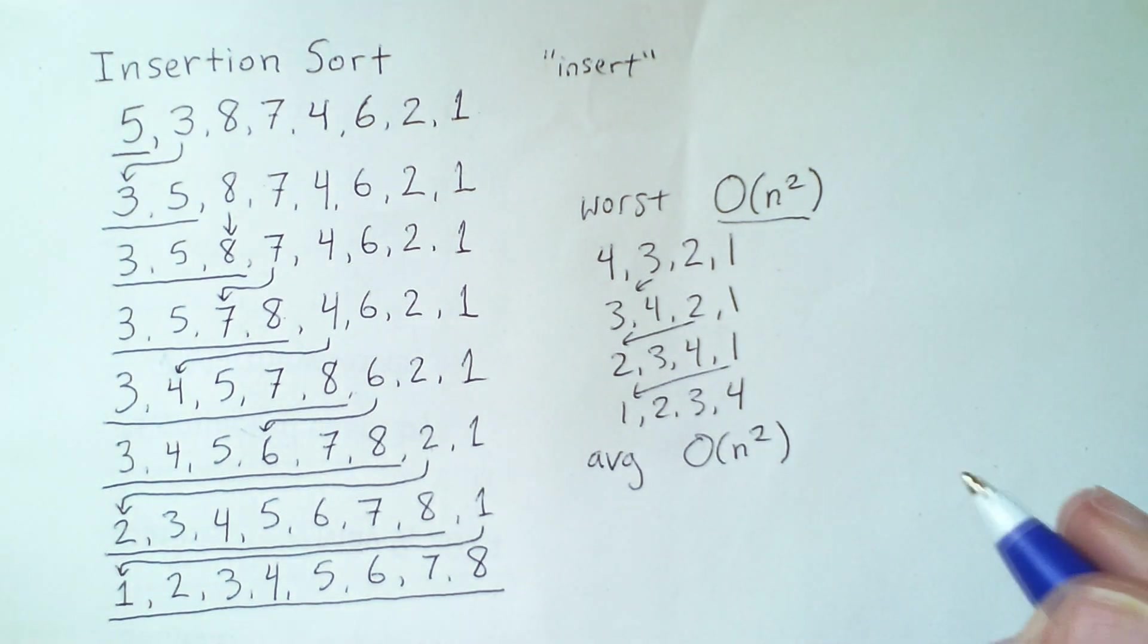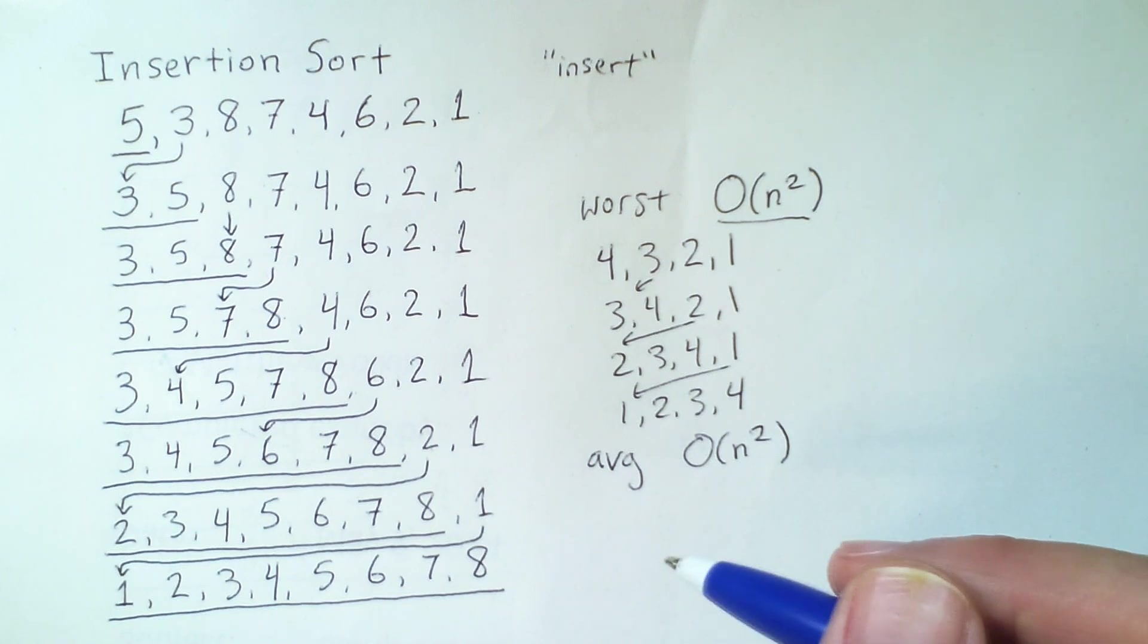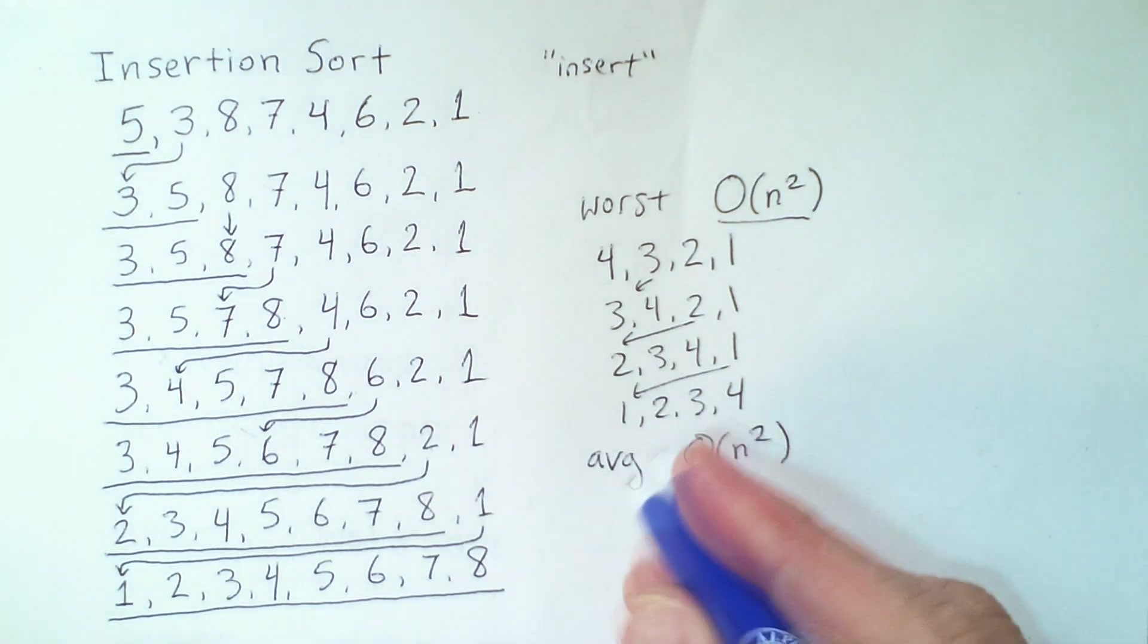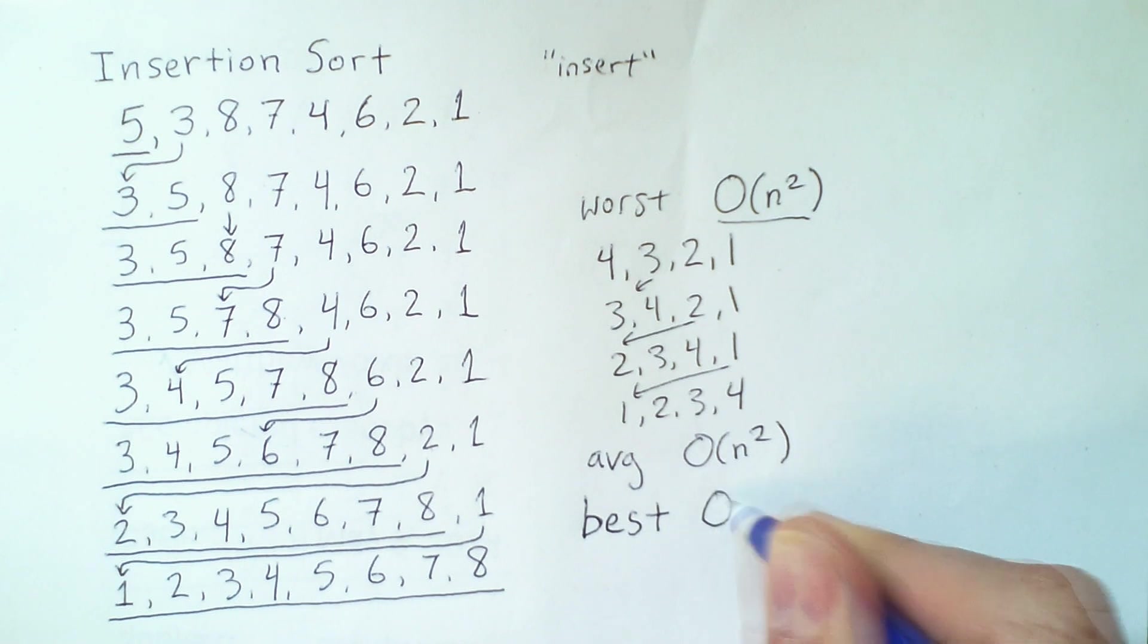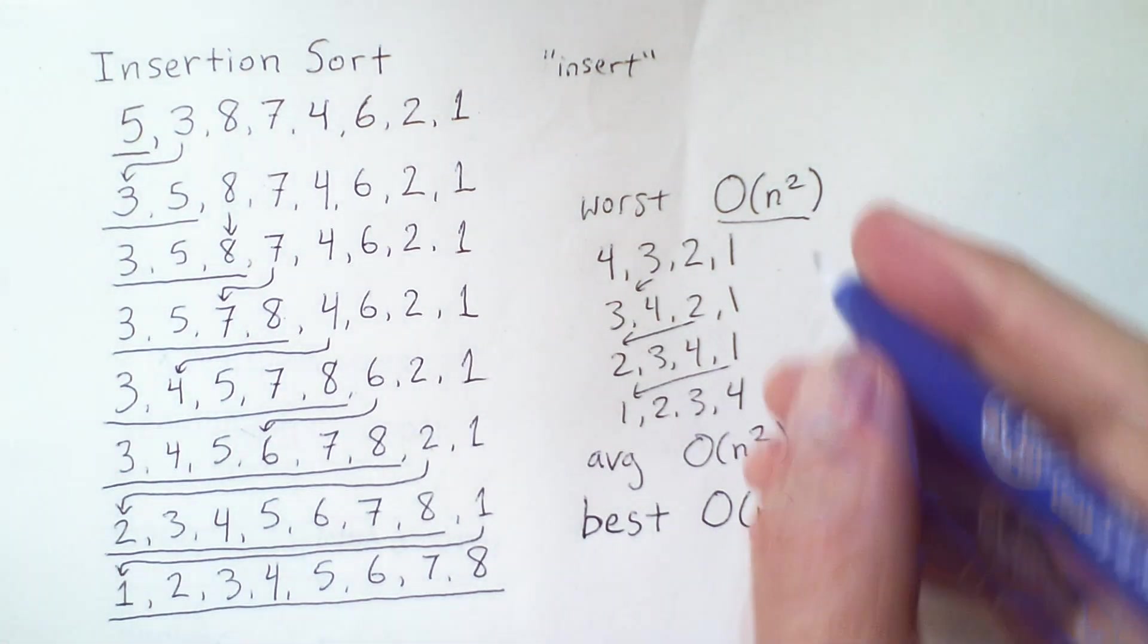However, the fact that it is sometimes faster does mean that in terms of real execution speed, insertion sort is generally much faster than selection sort. And in the best case, insertion sort is actually O of n.